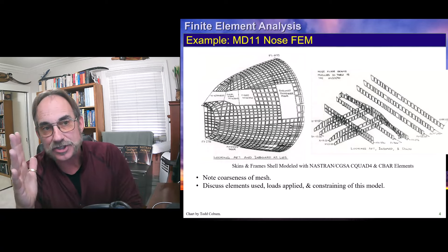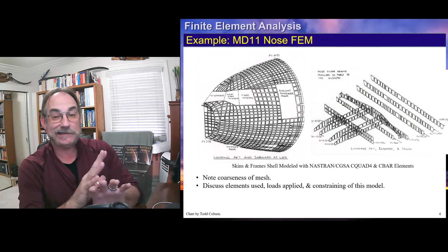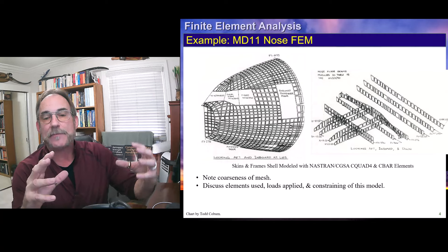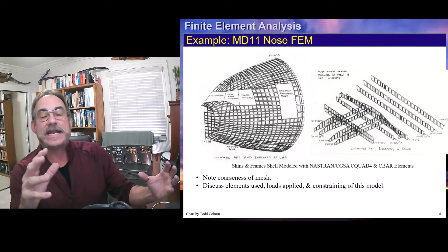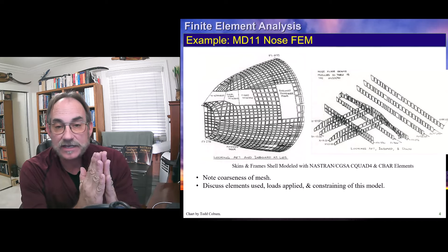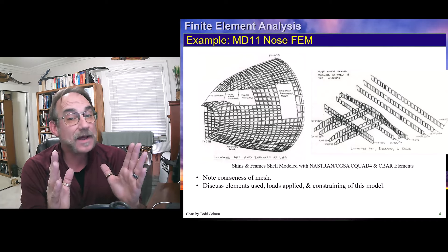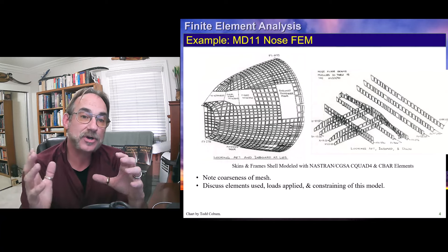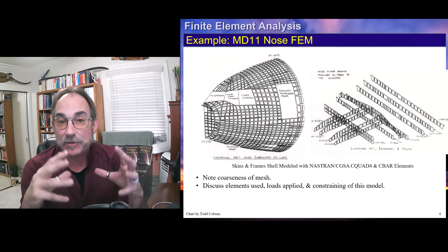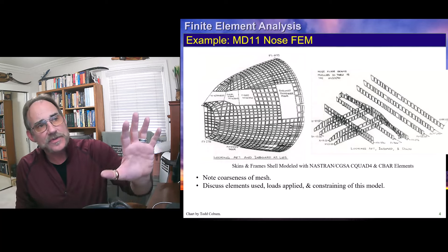A common engineering tool is to model dummy structure — structure with roughly the same properties: frames, stringers, skins, and floors — for some distance beyond the end of your model, typically about one diameter. You then fix that behind the dummy structure. That dummy structure simulates the response of the fuselage back there, so whatever loads you apply to the nose will react back without the constraint effects reaching the area you want to evaluate. I also simulated the corresponding loading of that dummy structure, so the nose response simulates reality.